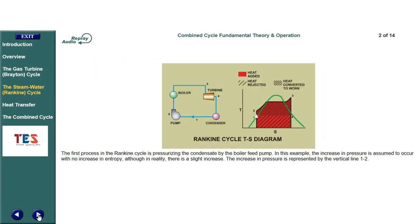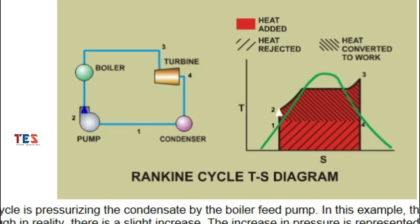The first process in the Rankine cycle is pressurizing the condensate by the boiler feed pump. In this example, the increase in pressure is assumed to occur with no increase in entropy, although in reality there is a slight increase. The increase in pressure is represented by the vertical line 1-2.